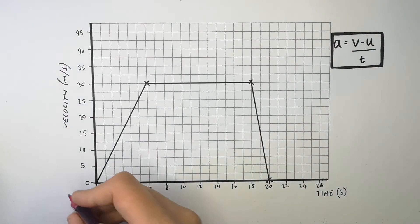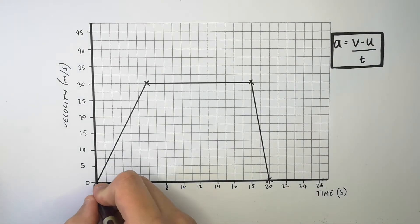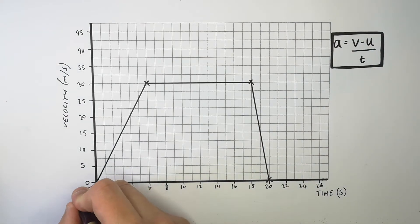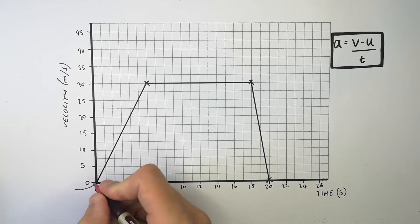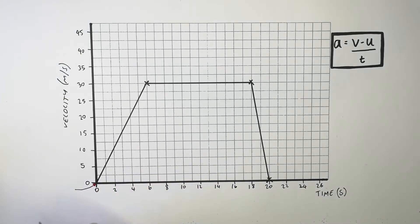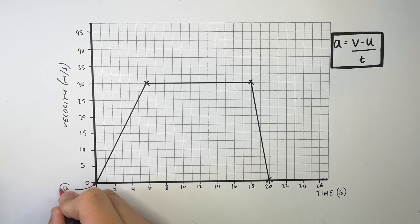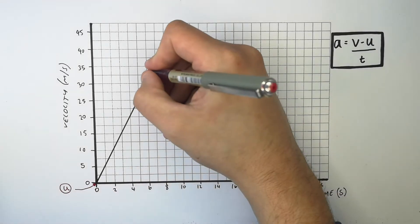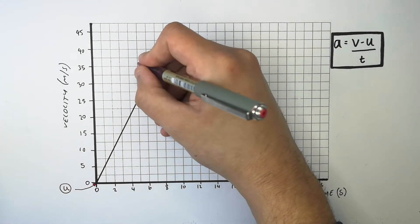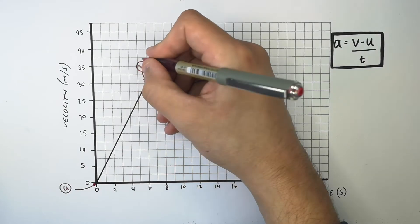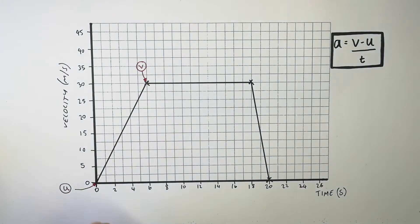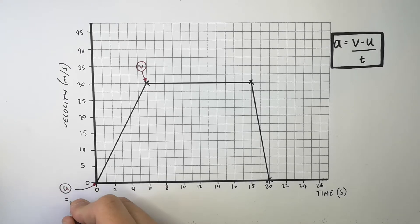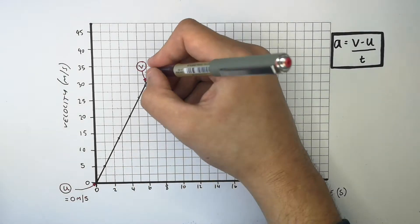We're going to start off with the first line of the graph. We're firstly going to identify u and v — the initial velocity and the final velocity. Here u is 0 metres per second, that is the initial velocity of the car that was stationary, and it increased its velocity to v. It took this car 6 seconds to accelerate from 0 to 30 metres per second.